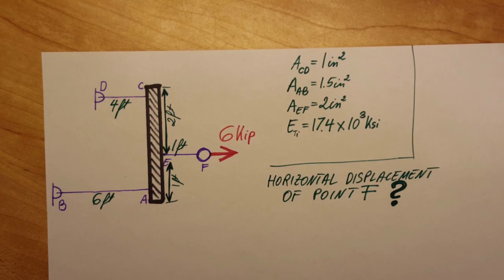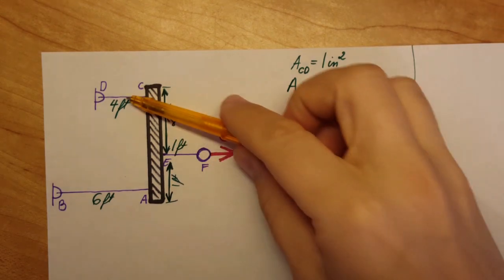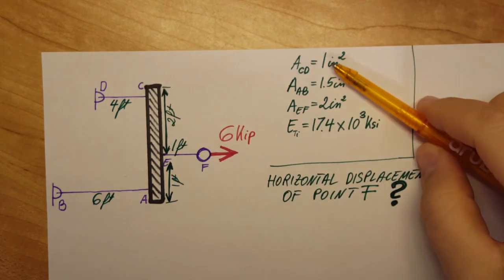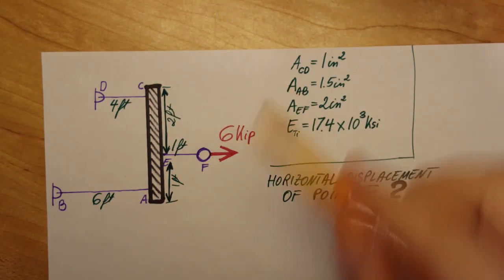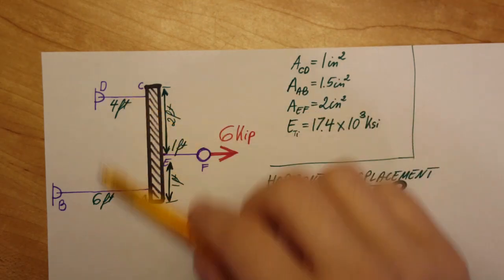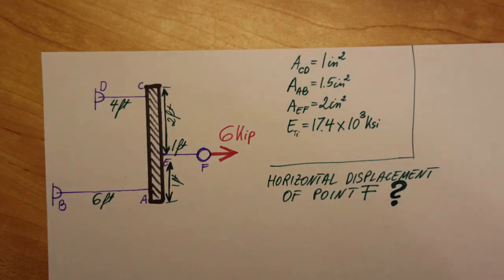Now these three rods, they have different cross-sections, different length, and they're gonna have different forces on them, so they're gonna be deforming at different rates, and that's what we need to find first.